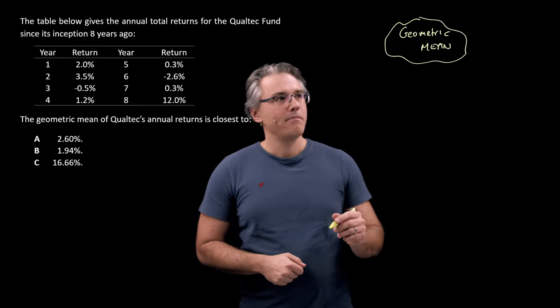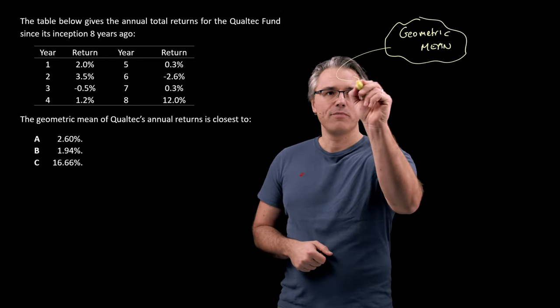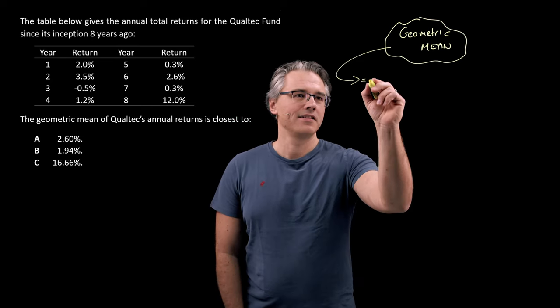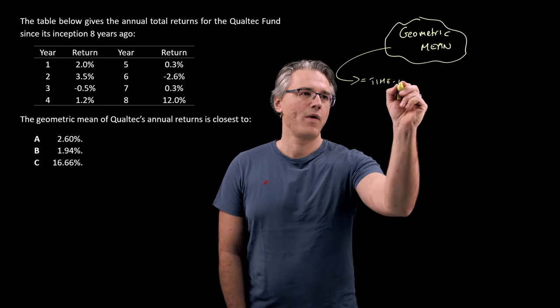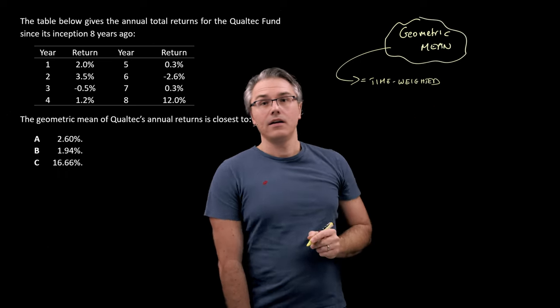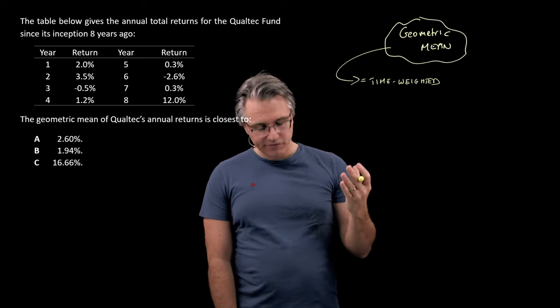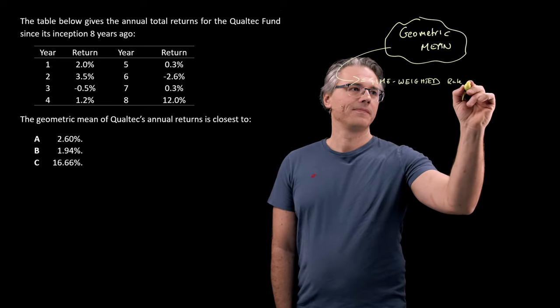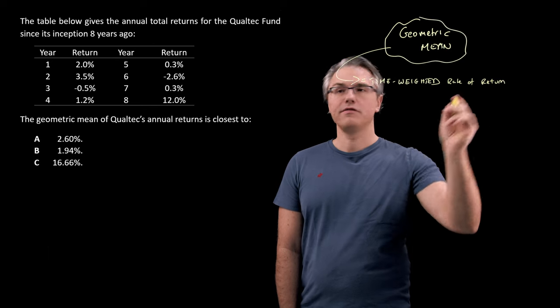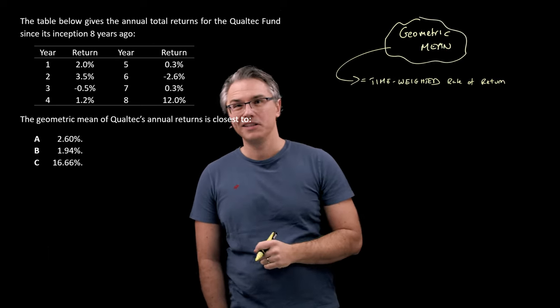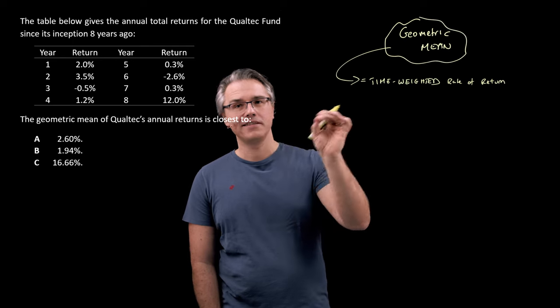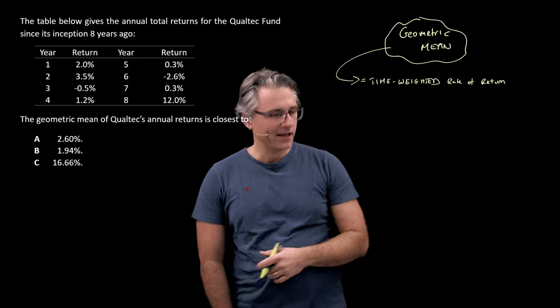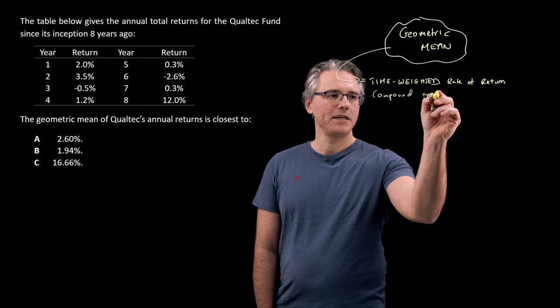Now the geometric mean, the topic of this video, is simply the same as the time weighted compound rate of growth or time weighted rate of return, which is a concept you should now be familiar with if you've watched my other videos when we did money weighted and time weighted rates of return. So time weighted rate of return or the compound growth rate, what do we mean by this?